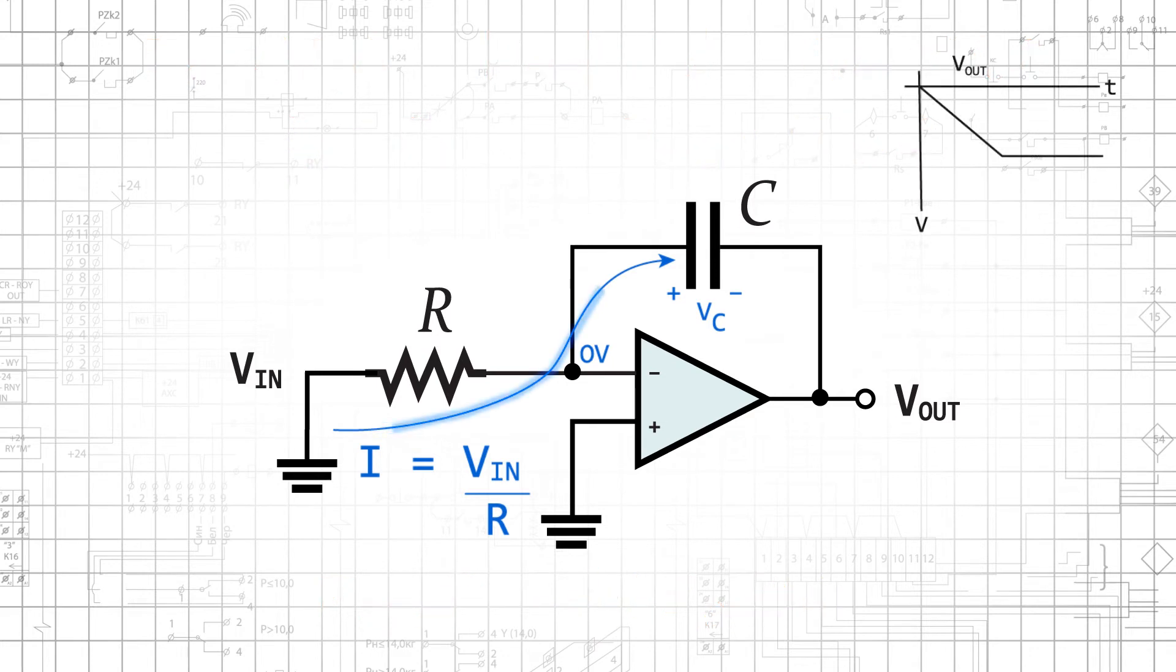However, with this configuration, offset voltage and input bias current both cause DC current flow in the feedback path, and will cause the capacitor's voltage to increase until the op-amp reaches saturation, even when the input is shorted to ground.